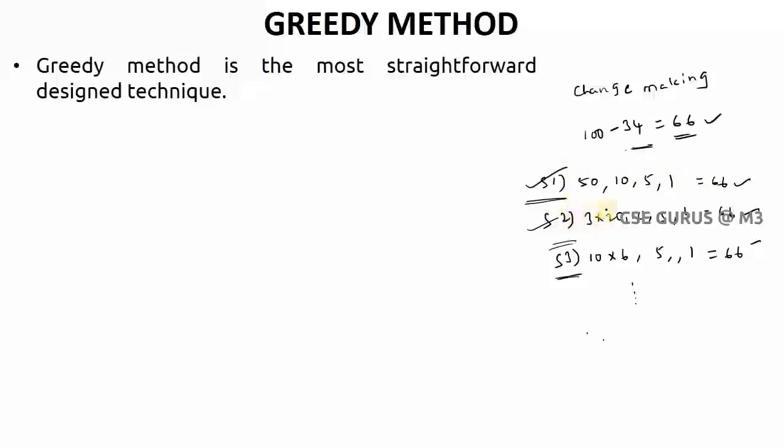And the second option, he may give 3 twenty rupees notes and 1 ten rupees note, 1 five rupee, 1 one rupee. Like this, not only that you may have more choices.